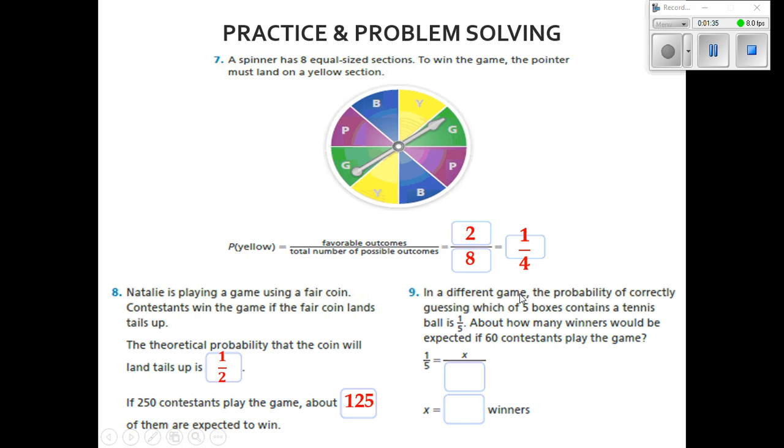Number nine says in a different game, the probability of correctly guessing which of five boxes contains a tennis ball is one out of five. Well, that makes sense—there's one ball out of five boxes. About how many winners would be expected if 60 contestants play the game?